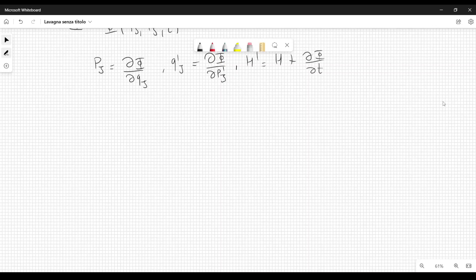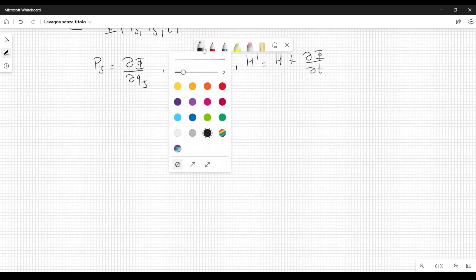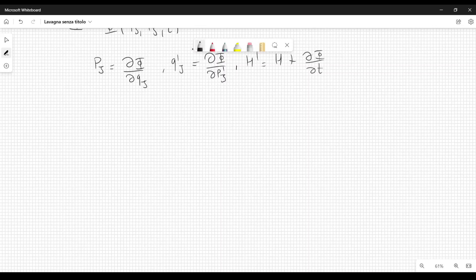Let's see how we can find Hamilton equations from Lagrangian mechanics. We will use two different approaches. The first approach is by considering the action written like this, S equal to the integral of the Lagrangian over time.